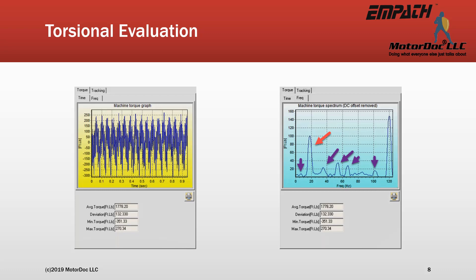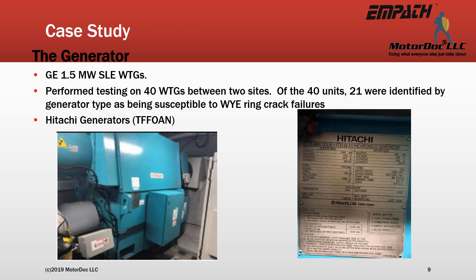These tools also allow a highly accurate analysis of other types of electric machines and their powertrains or loads. In this case study, we'll look at a common issue with the older GE wind generators, which is not unique to just this design or manufacturer. The M-PATH software was used with a data collector to look for cracked Y-ring connections in the rotor. 40 units were evaluated, with 21 being susceptible to this type of issue, of which 11 were found to have Y-ring fractures by testing.